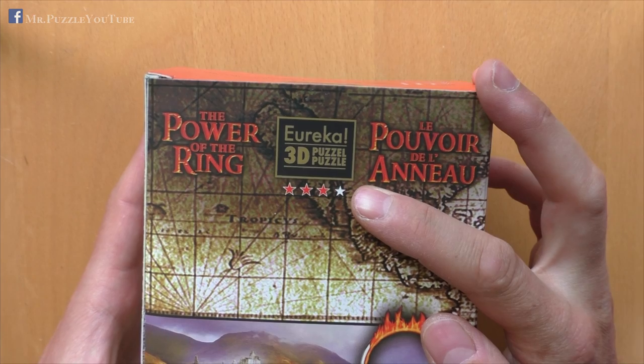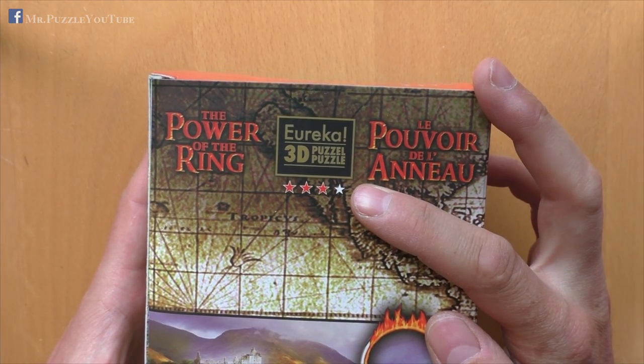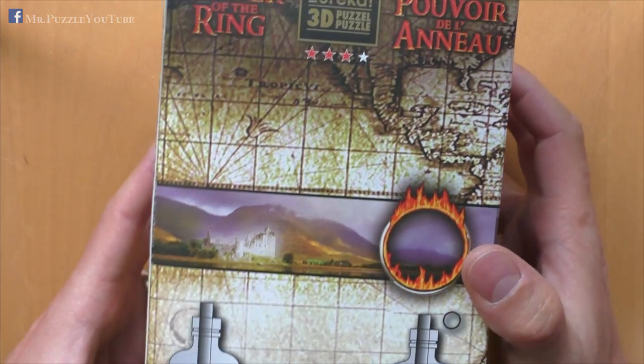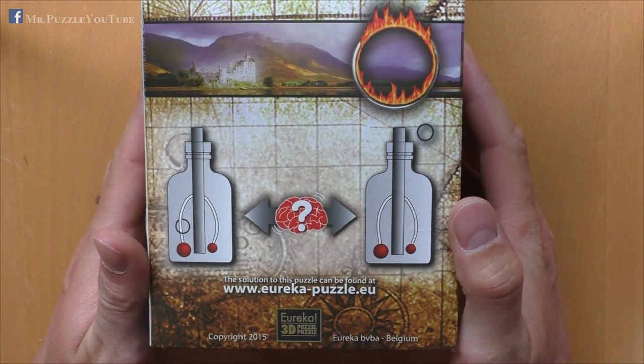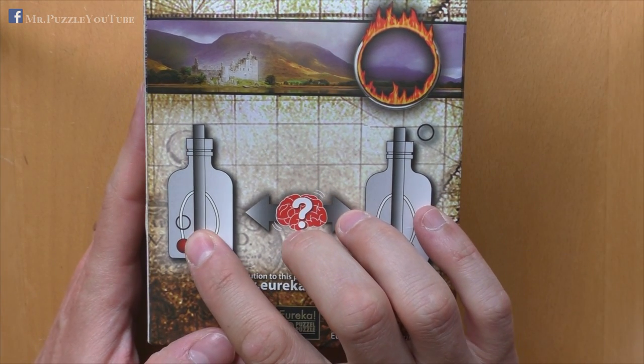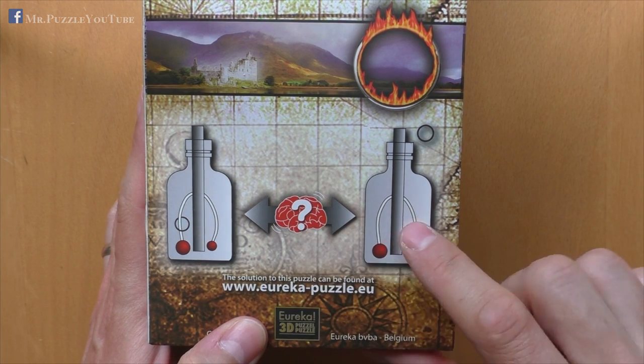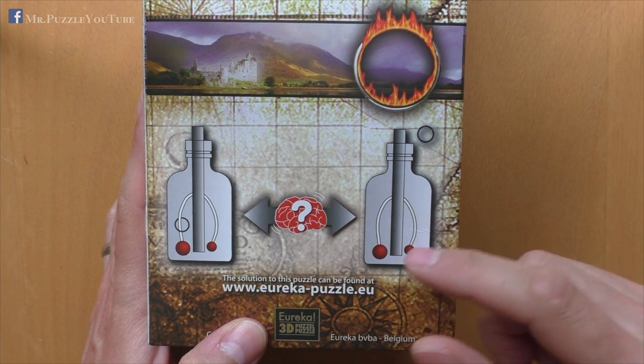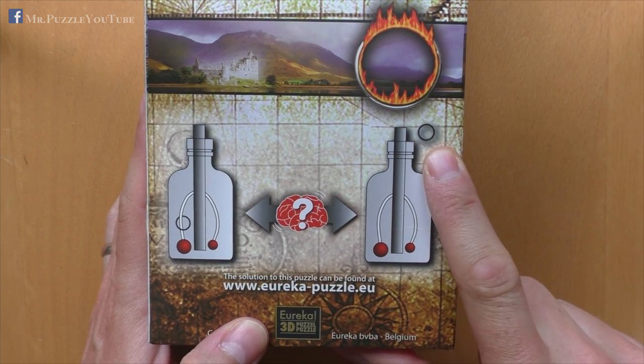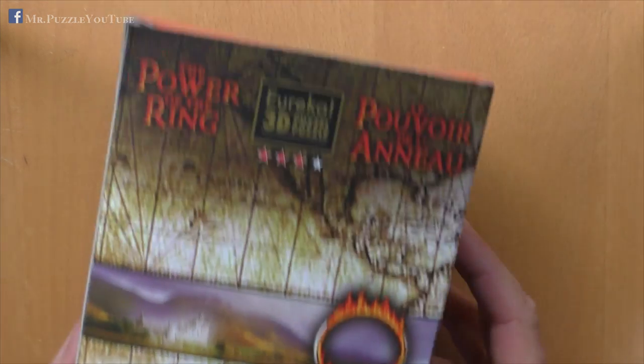The difficulty rating here is three out of a maximum of four stars, and the target of this puzzle is to remove this ring that's inside a bottle, and connect it to this cord from the bottle, and get it outside, and back again, of course.